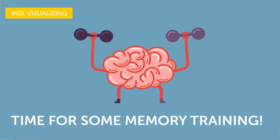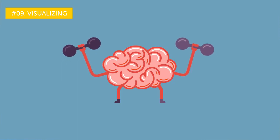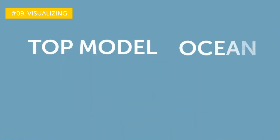Number nine, visualizing. Time for some memory training. It is an essential part of any brain workout. Can you quickly memorize the words you see on your screen? Top model, ocean, sun hat, dog, sandwich.